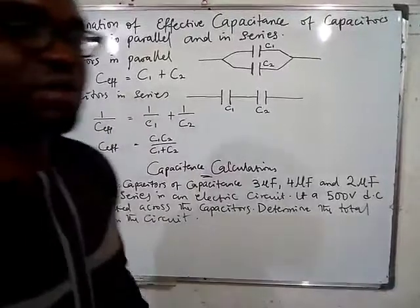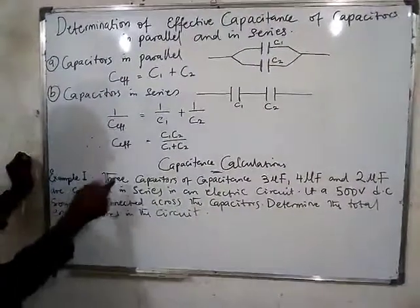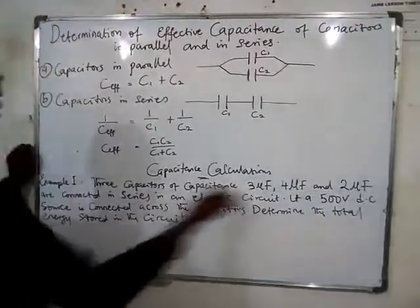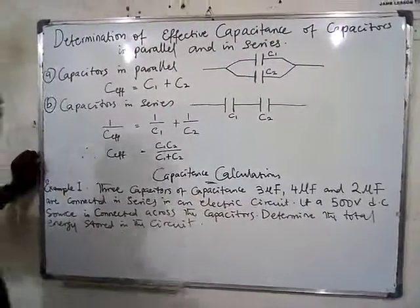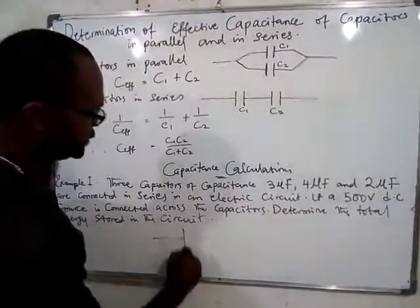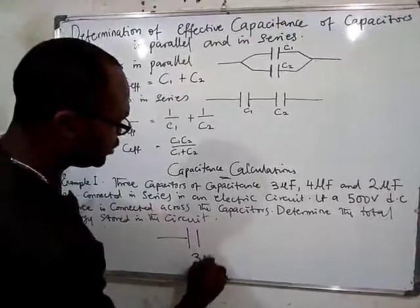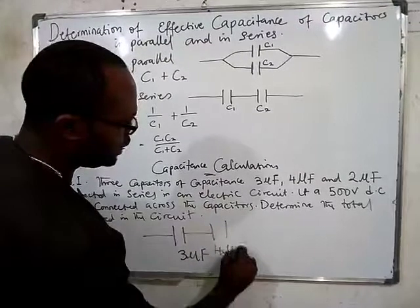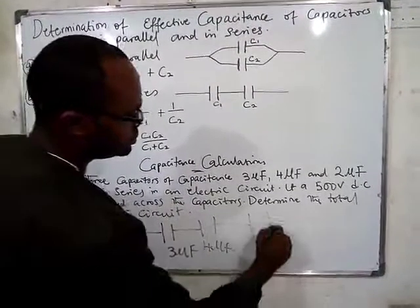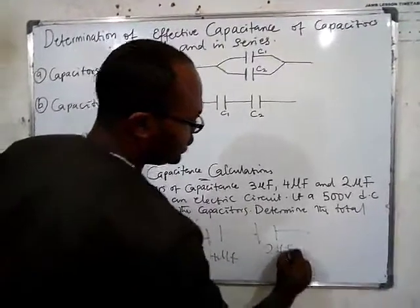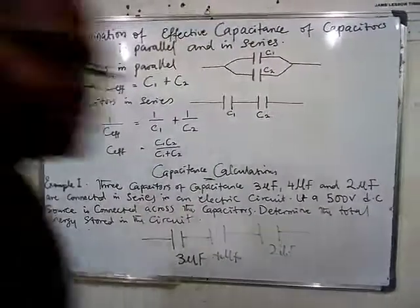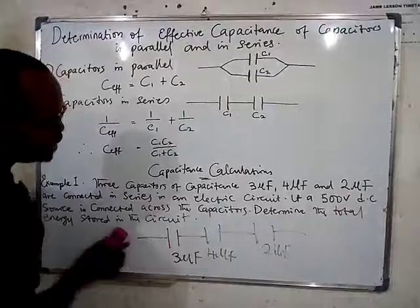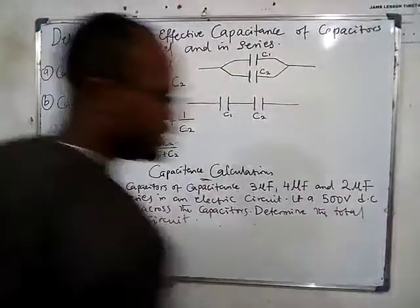Now we're going to try one calculation. In Example 1, three capacitors are connected in series — three microfarad, four microfarad, and two microfarad. They are connected in series, so how do you solve the calculation for a series connection?